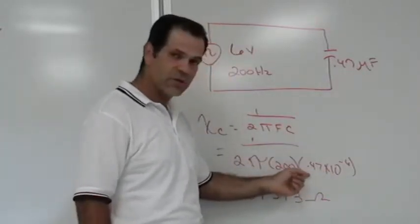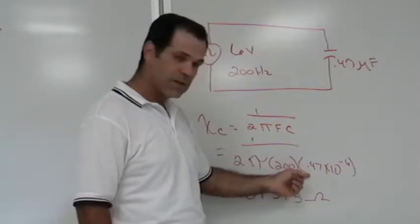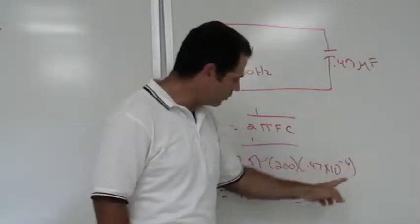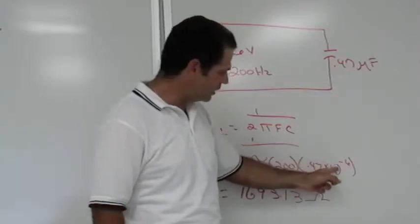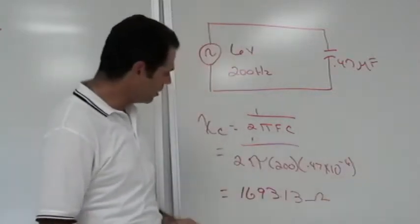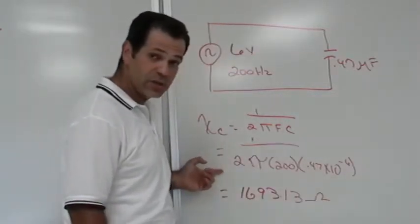So instead of having to enter all the zeros, all we did was multiply 0.47 times 10 to the negative 6, put it in parentheses, and put it into the equation itself.